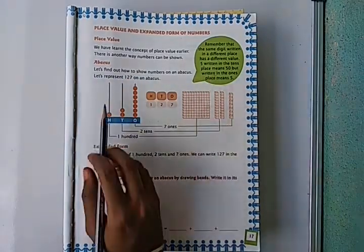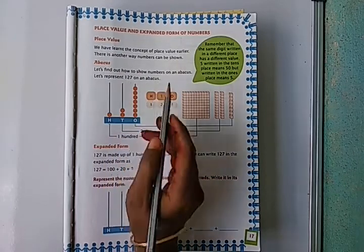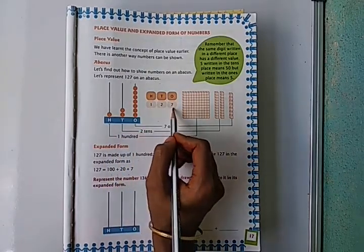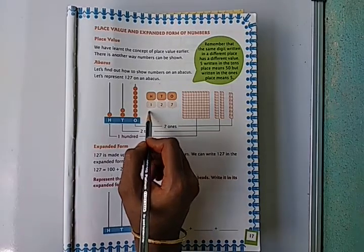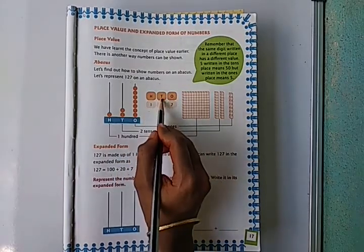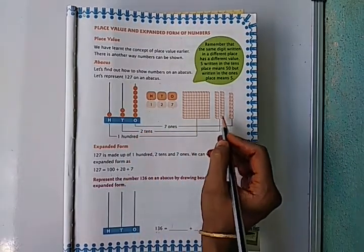Let's represent 127 on an abacus. Here we have number 127. Give place values to this number. We already discussed place values: ones, tens, hundreds. These are blocks. This one we also know well.